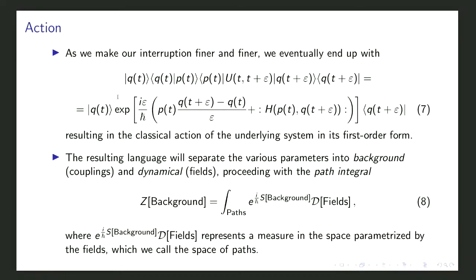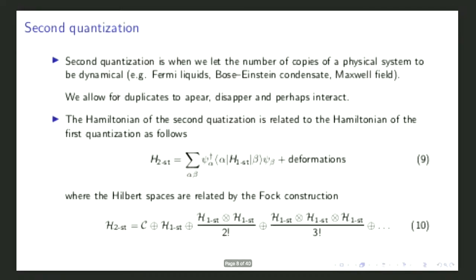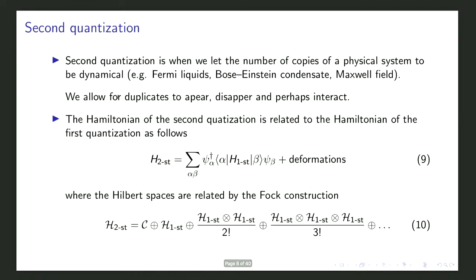All physics is obtained by deformations of this measure. Notice that there is an i in front of the action, so to maintain unitarity you must deform the measure in a particular way — the action must be real. One can of course imagine deforming outside of unitarity to describe systems in thermal baths and so on.